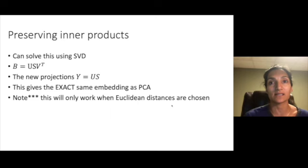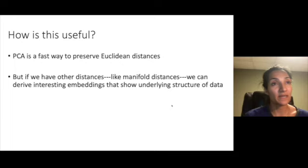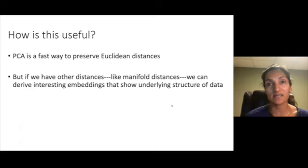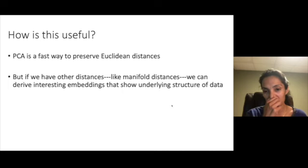So how is this useful? First, we know that PCA is actually a fast way to preserve Euclidean distances as well. But second, if we have other distances like the unifrac distance and one distance that we'll be talking about a lot is manifold distances, then we can derive interesting embeddings that show the underlying structure of the data given these newer notions of distance.